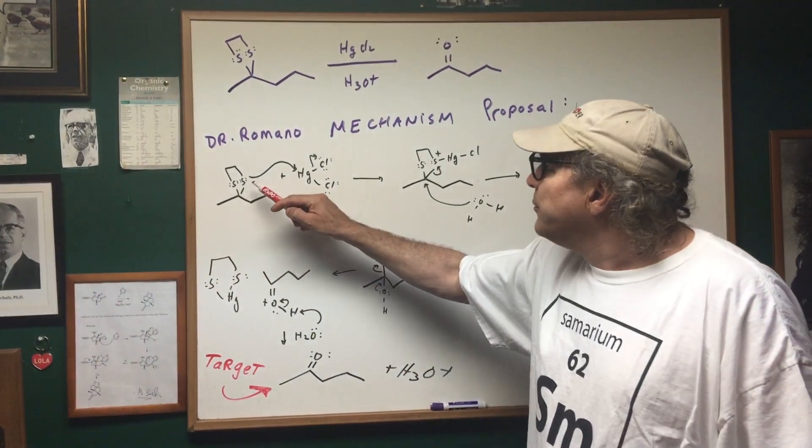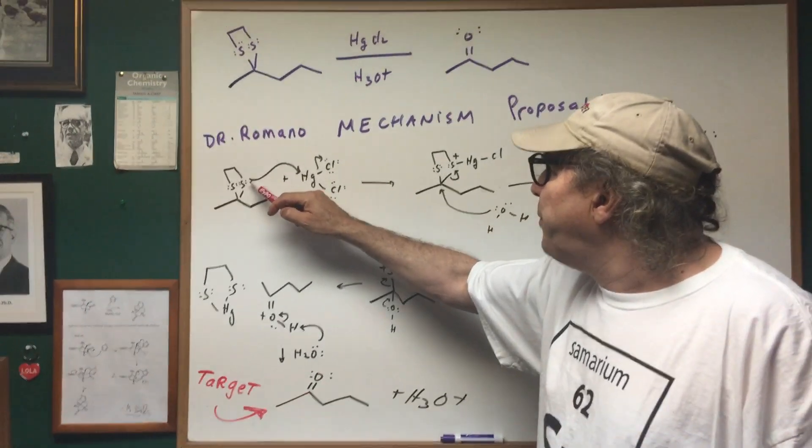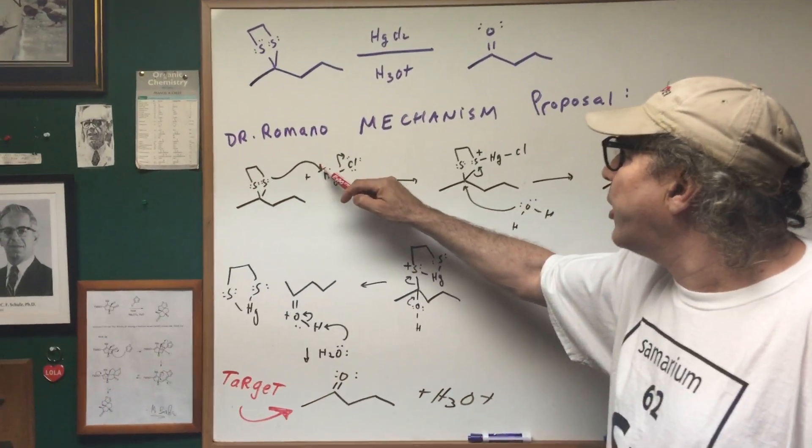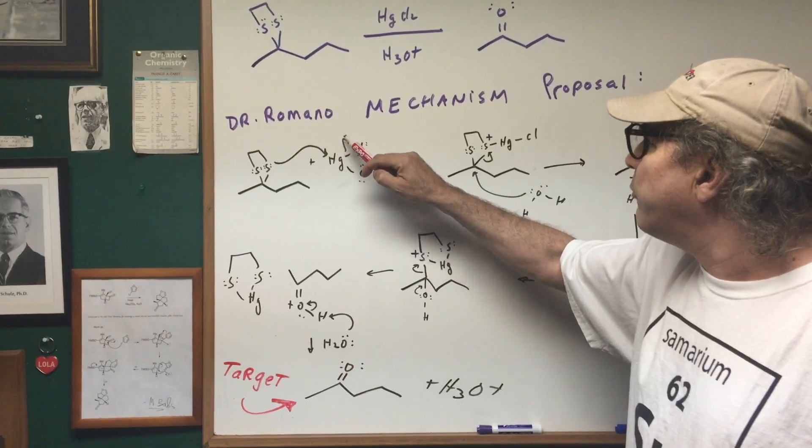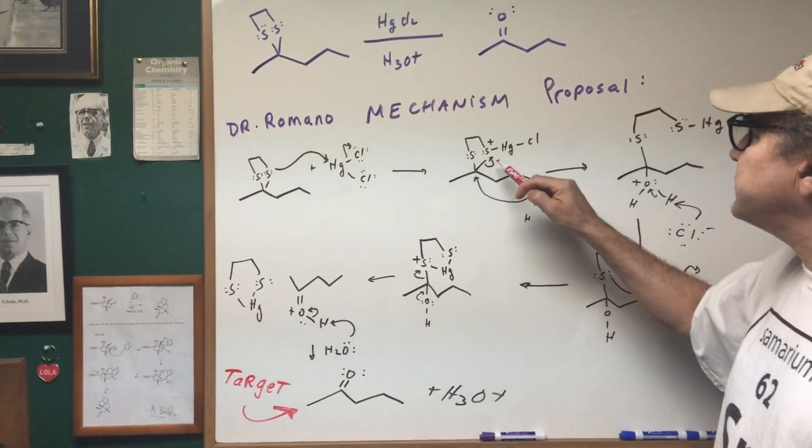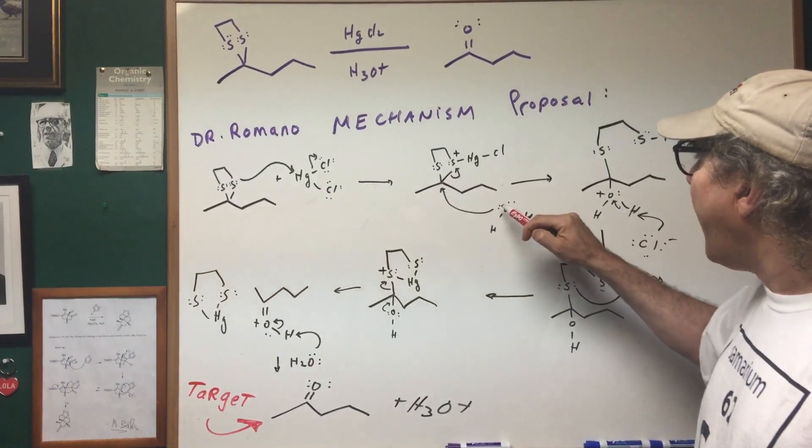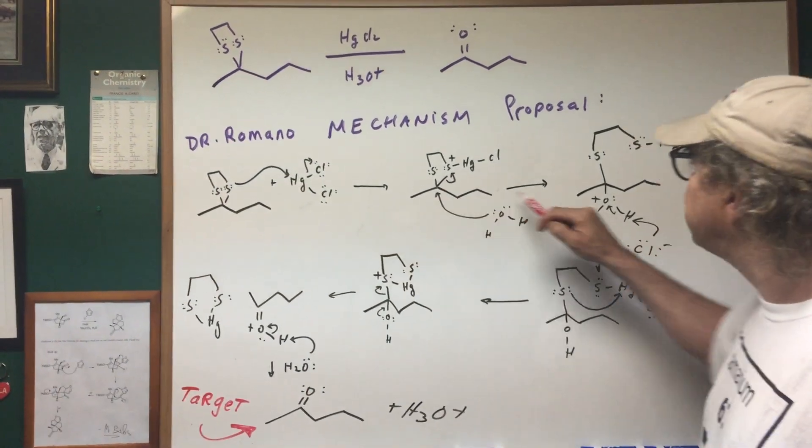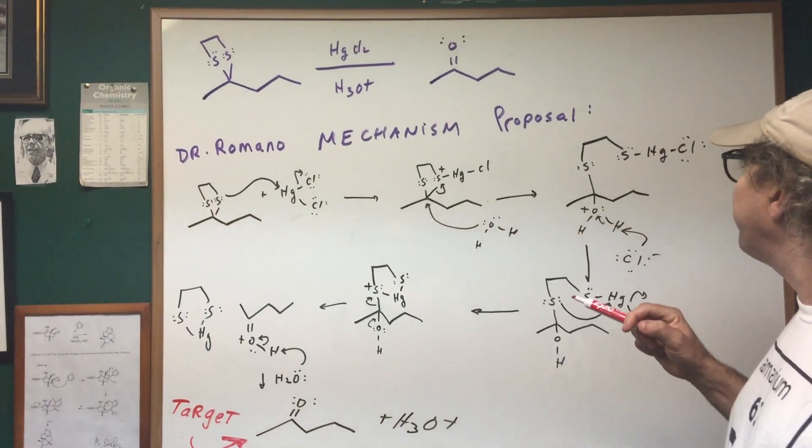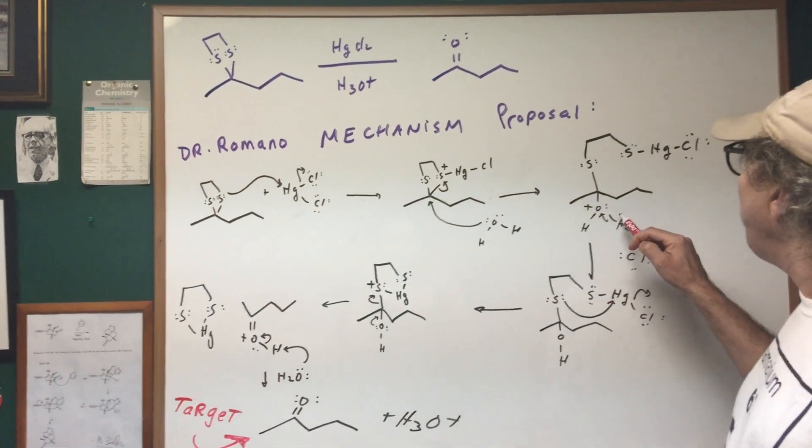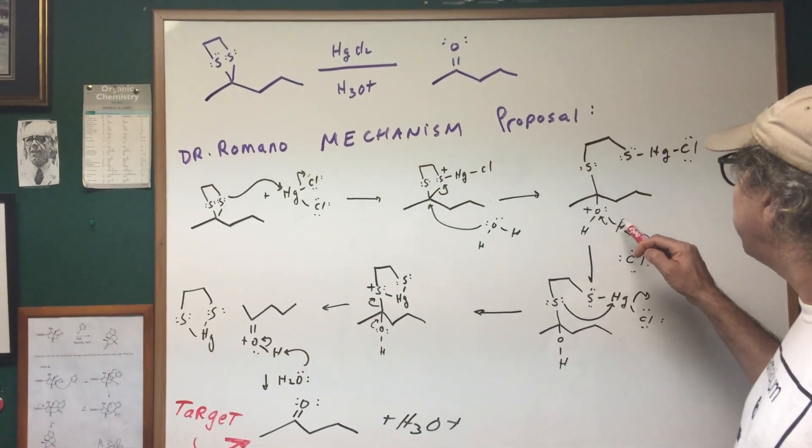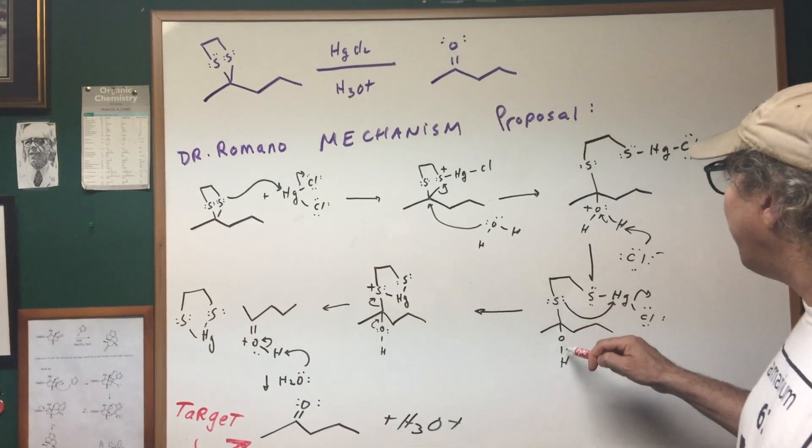First step, the thioacetyl group launches an attack on the mercury and one of the chlorines leave. In the next step, I'm going to move this group out as a water molecule comes in. So I simply do a nucleophilic attack.